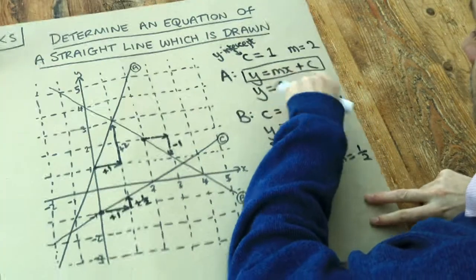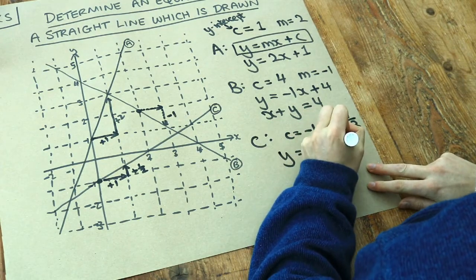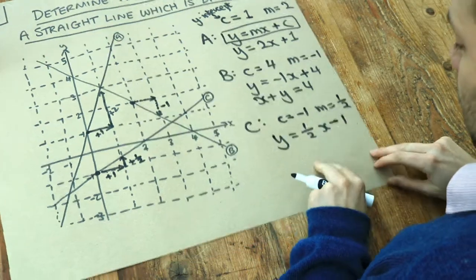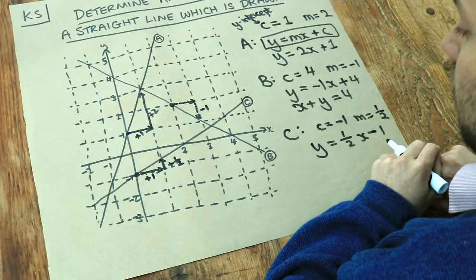And again, subbing into y equals mx plus c, y equals half x minus 1. Remembering that the x and y just stay as variables, they stay as x and y. And that is the equation of line C.